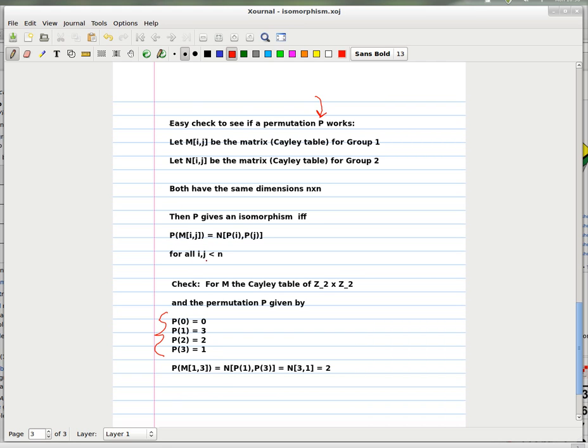Now we say that P gives an isomorphism—you can take this as the definition if you want. If for all i,j less than n, so this means that for all entries in the table M, entry i,j in the table M, if you apply the permutation to it, then it gives you the same number that you would get by first permuting the coordinates and then looking it up in N.